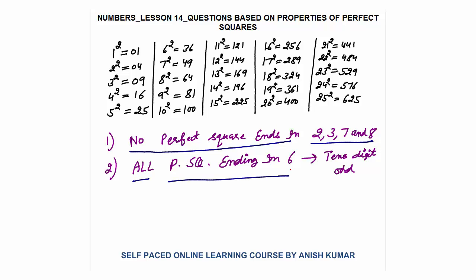So any number whose unit digit is 2, 3, 7, or 8 is definitely not a perfect square. Second observation: all perfect squares ending in 6 have an odd tens digit. For example: 36 (6 squared) has tens digit 3 (odd); 196 has tens digit 9 (odd); 256 has tens digit 5 (odd); 576 has tens digit 7 (odd); and 16 (4 squared) has tens digit 1 (odd). So if a perfect square ends in 6, its tens digit is always odd.